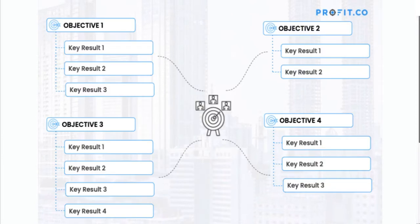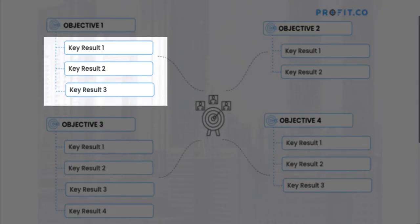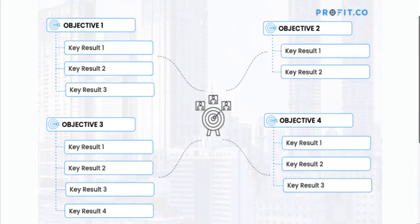Typically, an organization has three to four objectives, each followed by two to five key results. The objective is your goal and the key results are the measures you use to track your progress towards that goal. With OKRs, we can identify the problems your organization is facing and think about what needs to be achieved in order for you to be successful.